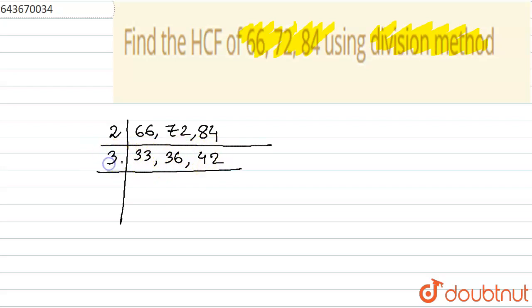So instead we'll put here 3 because it is divisible by all these numbers. So 3 ones are 3, 3 elevens are 33, then 3 twelves are 36, then 3 fourteens are 42, right.